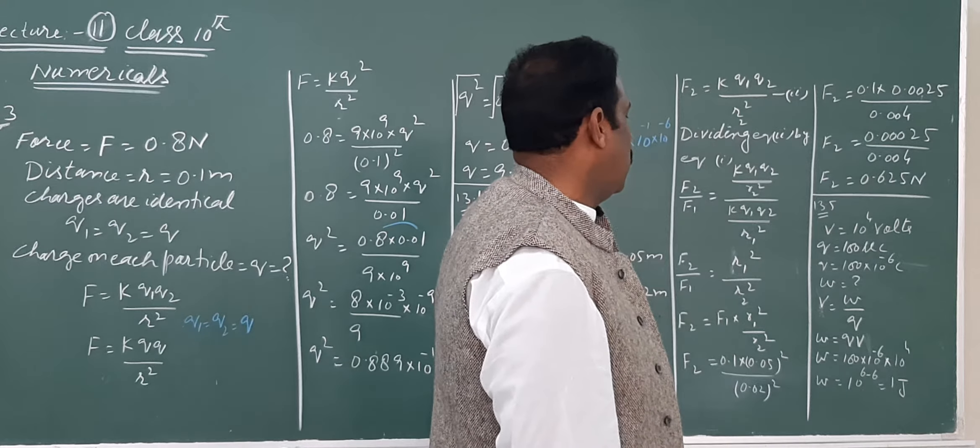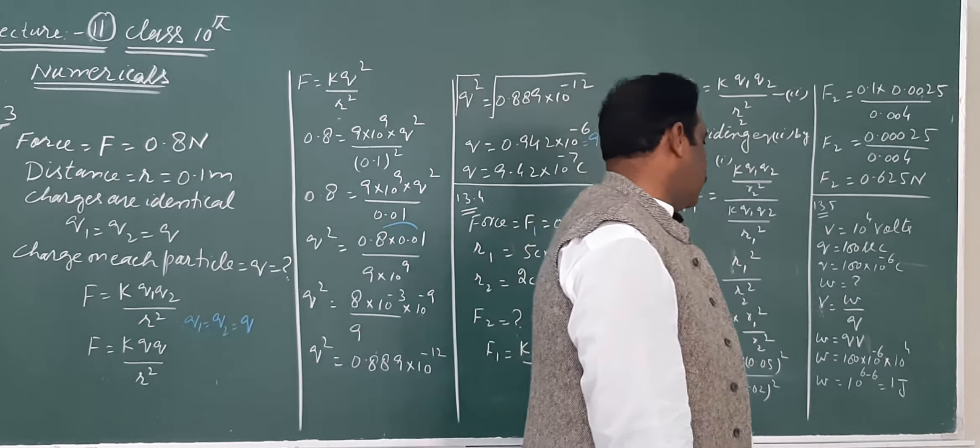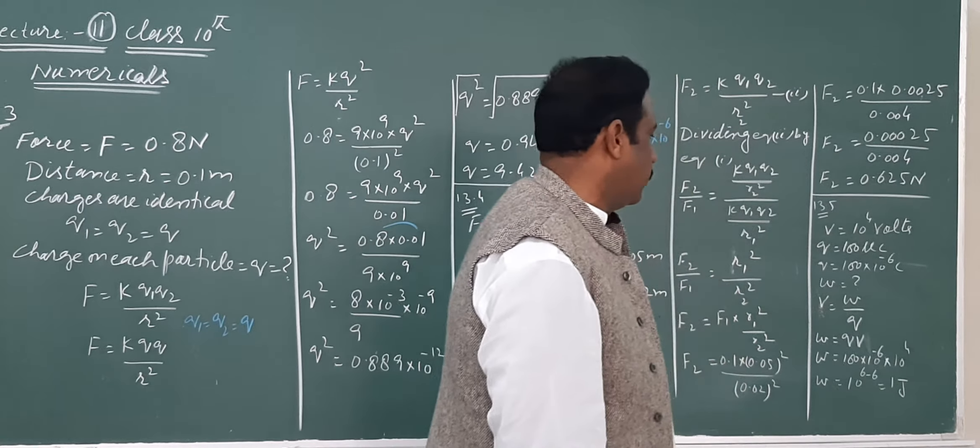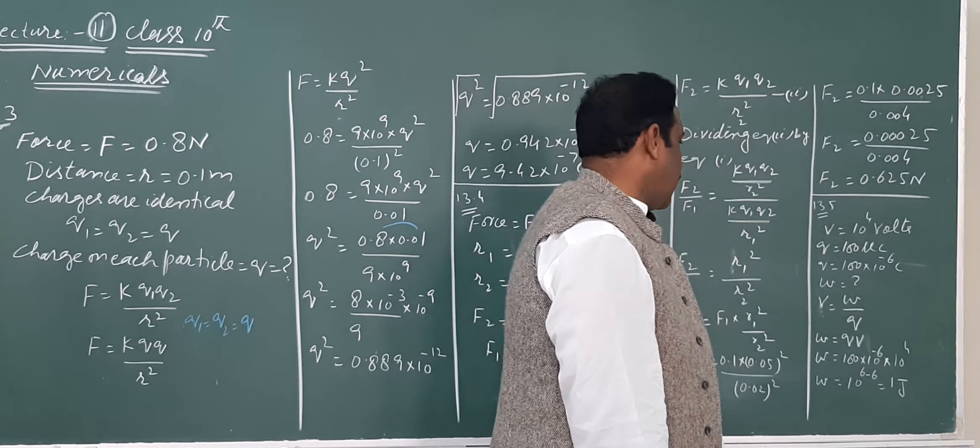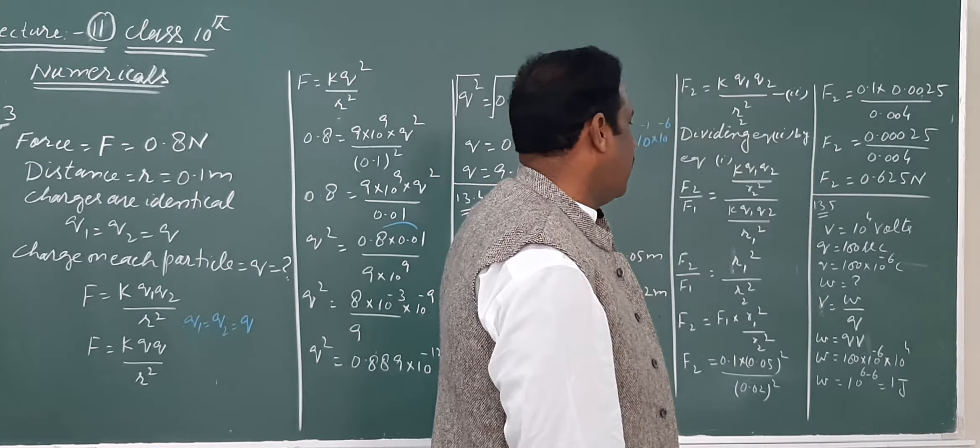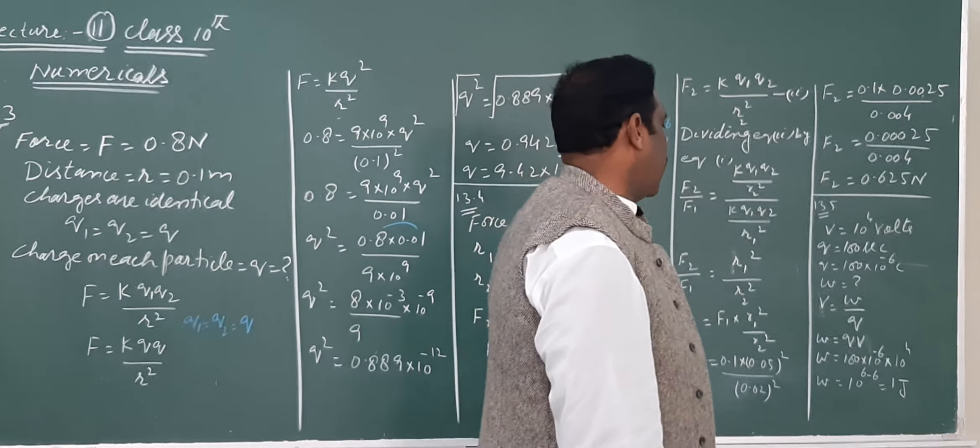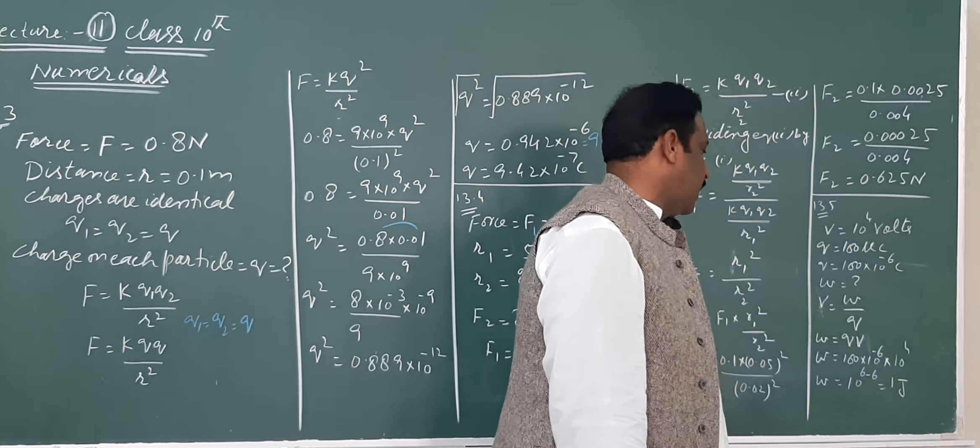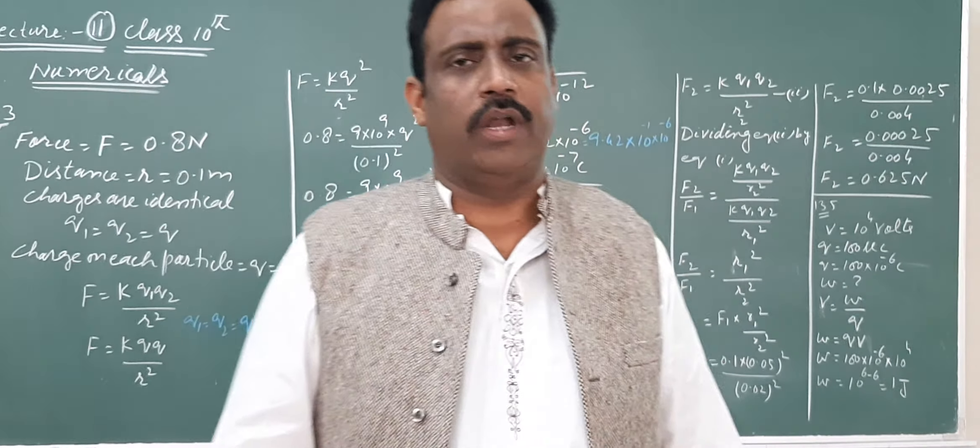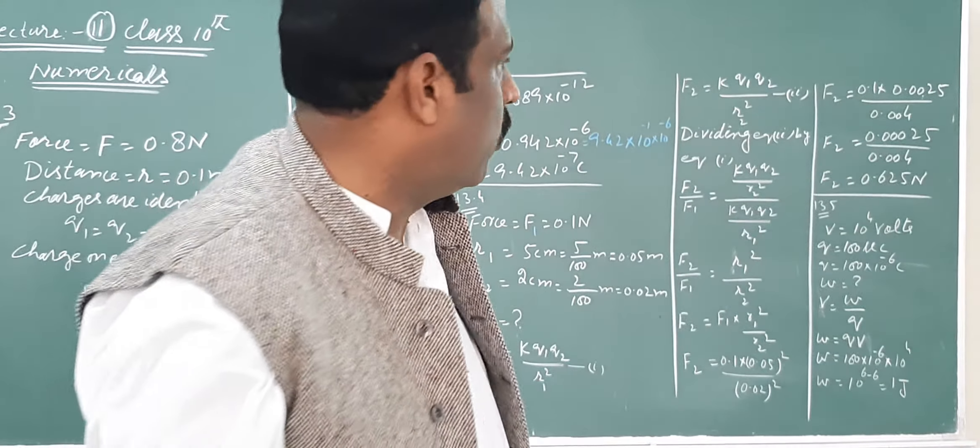Now 13.5. The statement is: electric potential at a point in electric field is 10 to power 4 volt. If a charge of 100 microcoulomb is brought from infinity to this point, what will be the amount of work done? We have the formula V equals W over Q, therefore W equals V multiplied by Q.